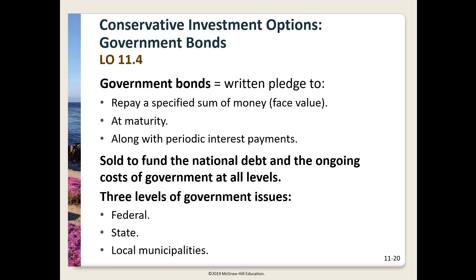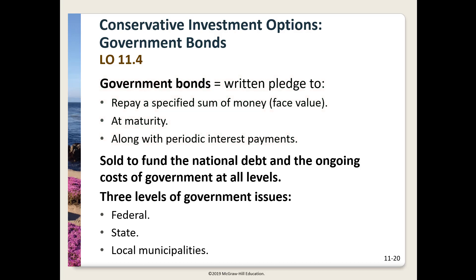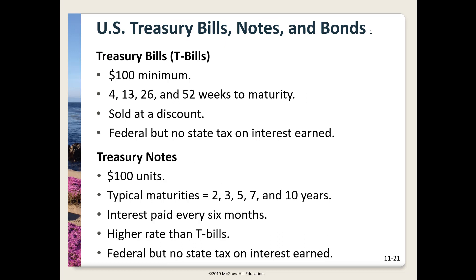Now let's look at one of the main types of investment assets: bonds. We start with bonds rather than stock as they are a bit less complicated and more conservative. A bond is a pledge by the issuer to make periodic interest payments and to repay the face value at maturity — basically an interest-only loan with a specific life or maturity. Bonds are also called fixed income securities since the payments are typically fixed. Federal, state, and local governments all issue bonds to finance the costs of government.